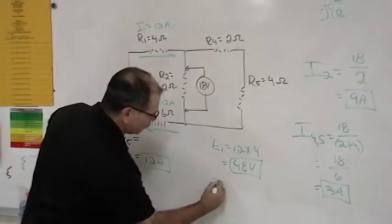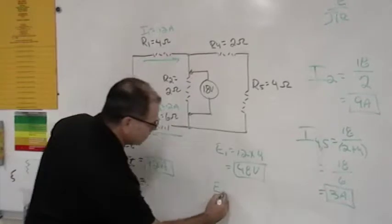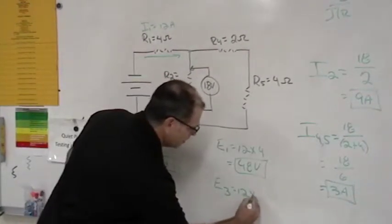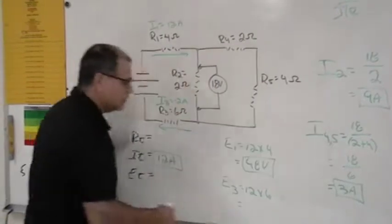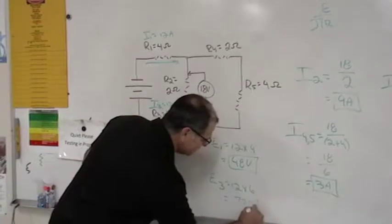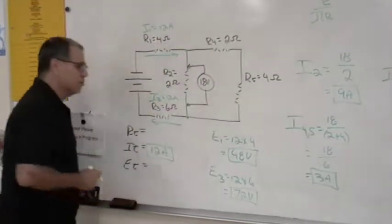And we'll do the same thing for 3. We got 12 amps times 6 ohms. And 12 times 6 is 72. So I got a total of 72 volts across 3.